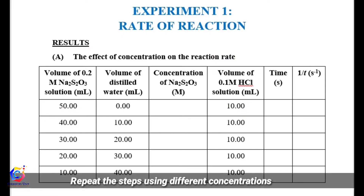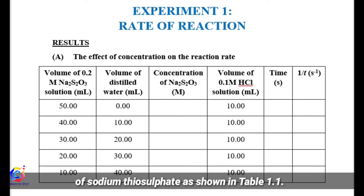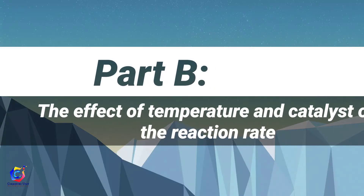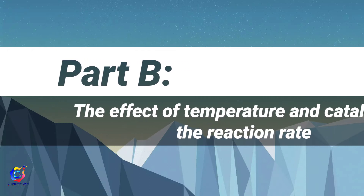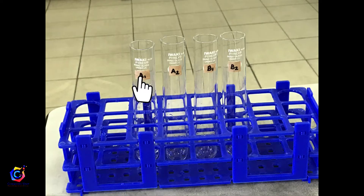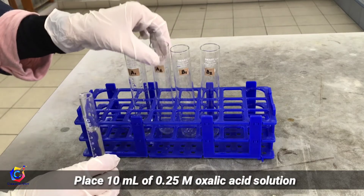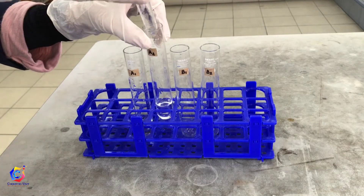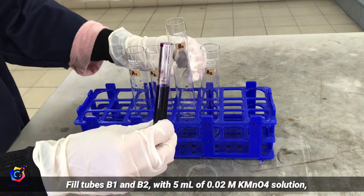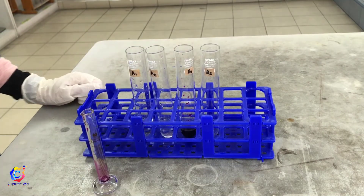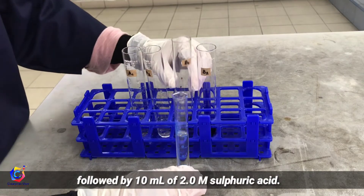Tabulate the data and repeat the steps using different concentrations. Now Part B: the effect of temperature and catalyst on the reaction rate. Label 4 boiling tubes as A1, A2, B1, and B2. Place 10 ml of 0.25 molar oxalic acid solution into tubes A1 and A2. Fill tubes B1 and B2 with 5 ml of 0.02 molar potassium manganate solution and 10 ml of 2 molar sulfuric acid.